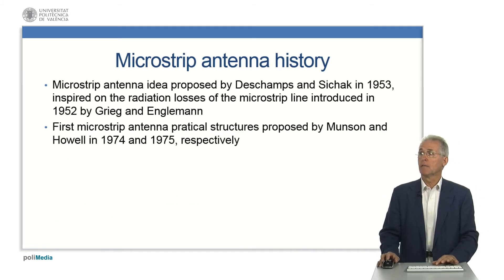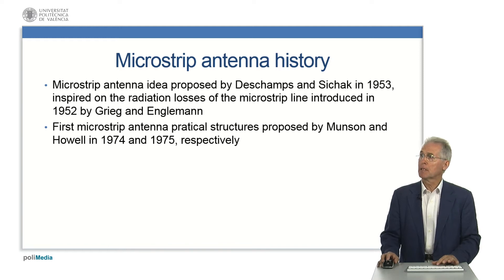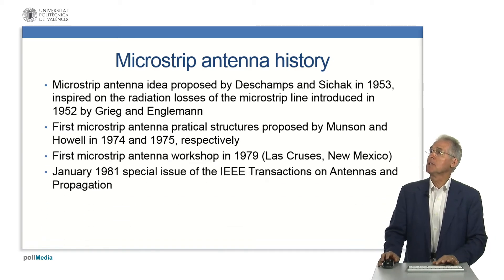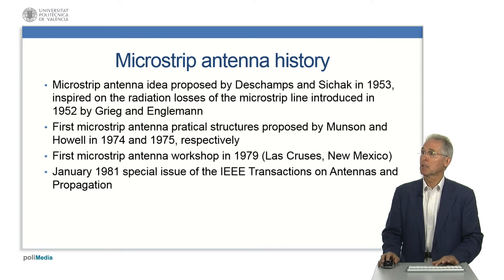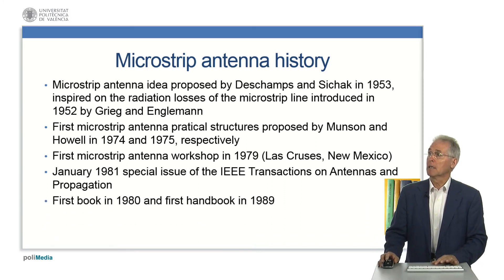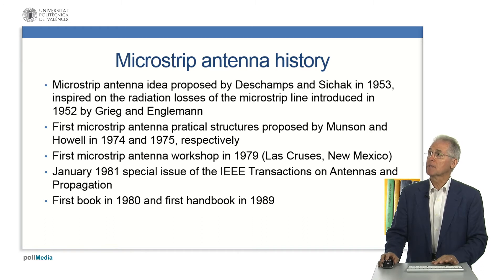Only in 1974 and 1975, more than 20 years later, the first practical microstrip antennas were proposed by Munson and Howell. Apparently, this delay was caused by the lack of good substrates. Two important milestones are the workshop held at New Mexico State University, Las Cruces, in November 1979, and the January 1981 special issue of the IEEE Transactions on Antennas and Propagation. In 1980, Bahl and Bhartia authored the first microstrip antenna book, and the first edited book was by James and Hall in 1989.